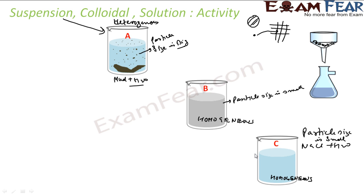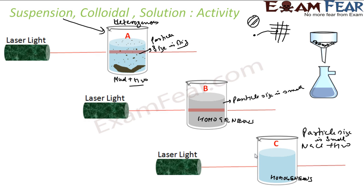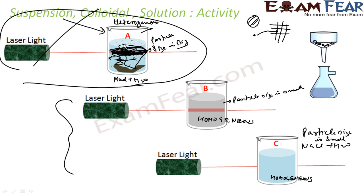To differentiate colloidal from solution, we can use a laser beam. When you pass a laser light through the milk-and-water mixture, you will see a visible beam of light — a ray of light is scattered through it. But when you pass the laser through the common salt or sugar in water, you will not see any beam of light. From this, we can identify the milk mixture as colloidal. This phenomenon is called the Tyndall effect.